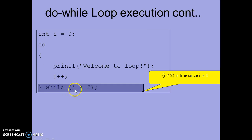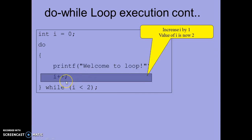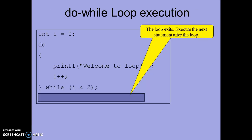After that the condition is tested. Here i is 1, so 1 is less than 2, meaning the condition is true. So it will go and execute the body of the loop again, displaying 'welcome to loop' on the screen. Again the value of i is increased by 1, so now i becomes 2. We then check whether the condition is true — here i is equal to 2, so 2 is less than 2 is false. So you will be outside the loop; the loop is terminated and the next statement after the loop will be executed.